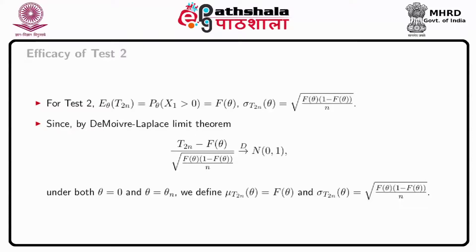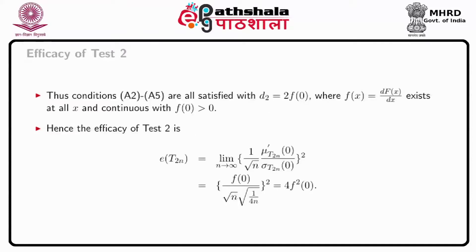Defining mu(T2_n, theta) equal to F(theta) and sigma(T2_n, theta) equal to the square root of F(theta) times (1 minus theta) divided by n, we can satisfy conditions A2 to A5, which are all satisfied with D2 equal to twice of small f(0), where f(x) equals dF(x)/dx exists at all x and is continuous with f(0) greater than 0. Hence, the efficacy of test 2 equals 4 f(0) squared.